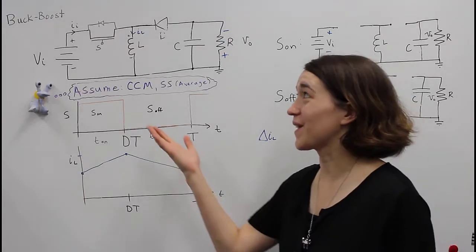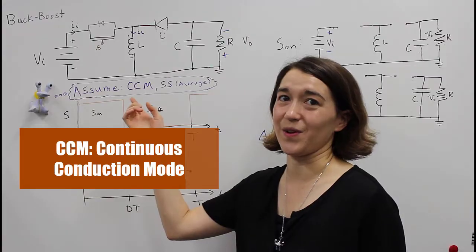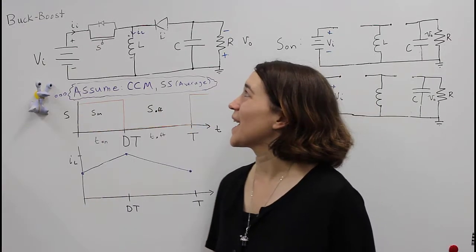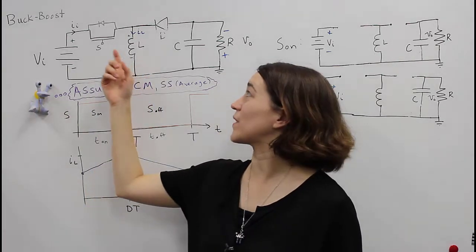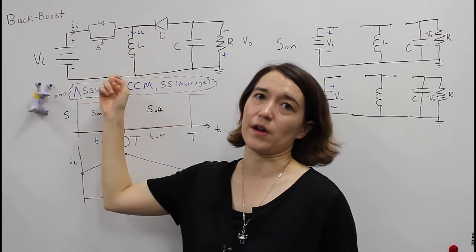So today, we're going to be talking about the buck-boost converter in continuous conduction mode and assuming steady state average. And here you can see we have the topology already set up. And we have our three components, active switch, passive switch, and our inductor.